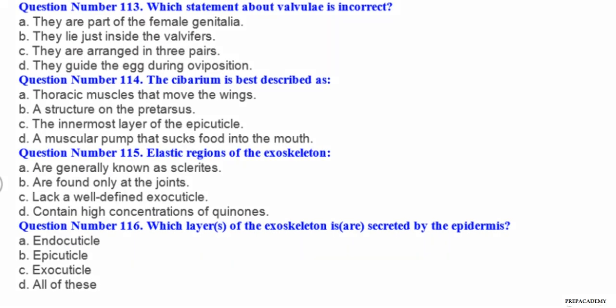Question number 113. Which statement about valvulae is incorrect? A they are part of the female genitalia, B they lie just inside the valvifers, C they are arranged in three pairs, D they guide the egg during oviposition. Question number 114. The subalar arm is best described as: A thoracic muscles that move the wings, B a structure on the pretarsus, C the innermost layer of the epicuticle, D a muscular pump that sucks food into the mouth.